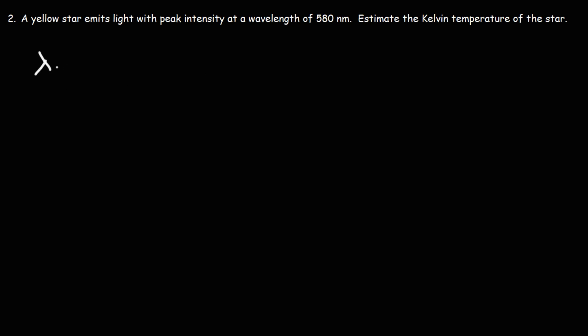Starting with this formula, we're going to solve for T. To get T by itself, we need to divide by the wavelength at peak intensity. The Kelvin temperature is going to be 0.0029 meters times Kelvin divided by lambda P.